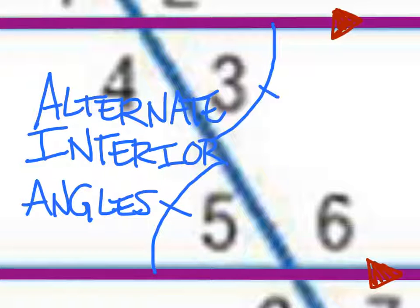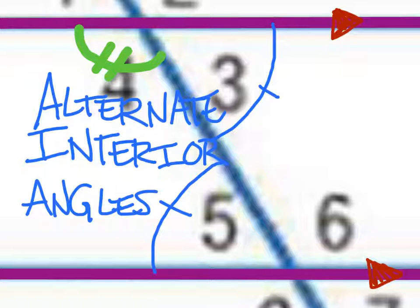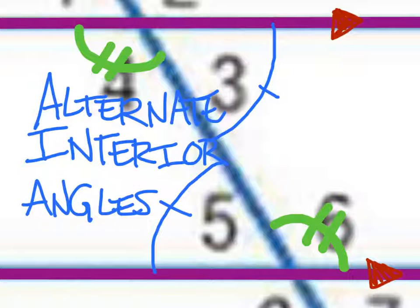Angle 4, indicated with two marks, is also alternate with angle 6. Since they're both on the interior, they're alternate interior angles, and we consider these to be congruent as well.